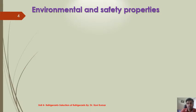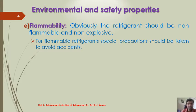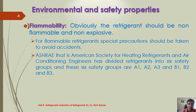The next environmental and safety property is flammability. Obviously the refrigerant should be non-flammable and non-explosive. Special precautions should be taken to avoid accidents. ASHRAE — the American Society for Heating, Refrigerants, and Air Conditioning Engineers — has divided the refrigerants into six safety groups: A1, A2, A3 and B1, B2, B3.